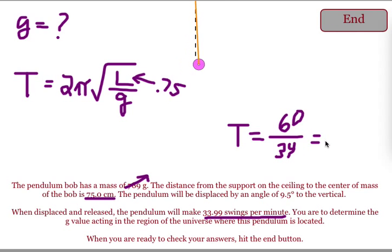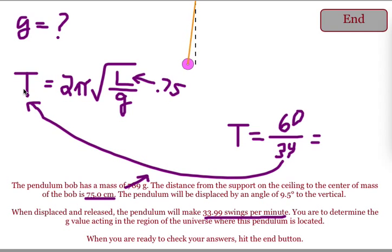So, when we divide, we should get the time it takes to make one oscillation. That gets placed as the period, and we solve it for the gravitational field strength.